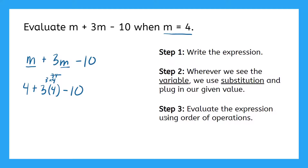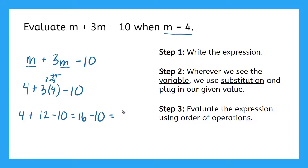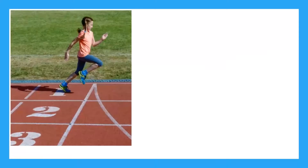Step 3 — I evaluate using order of operations, which means I do multiplication first: 4 plus 3 times 4 is 12, minus 10. Then I combine the addition: 4 plus 12 gives me 16, minus 10. And 16 minus 10 is 6. So the answer to my expression when m equals 4 is 6.